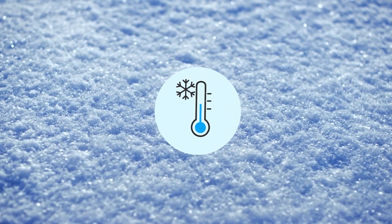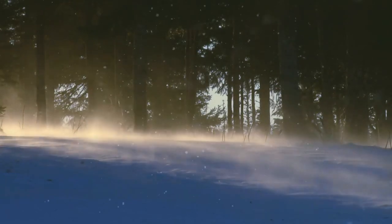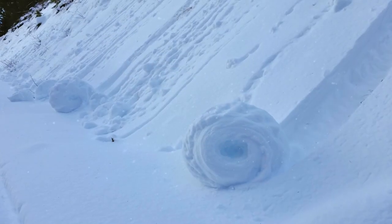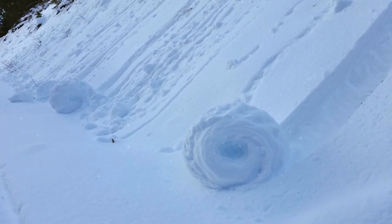Snow rollers occur when temperatures are near melting and there is a fresh layer of fluffy snow on the ground that doesn't stick to the surface it lies on. The wind should be strong enough to make the roller roll, but not too strong to break it apart. These conditions sound rather precise, which is why snow rollers are so rare.